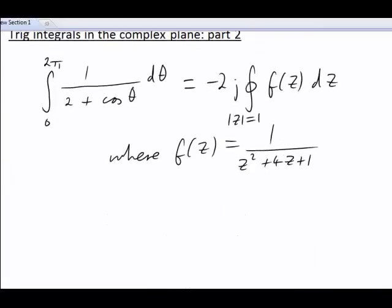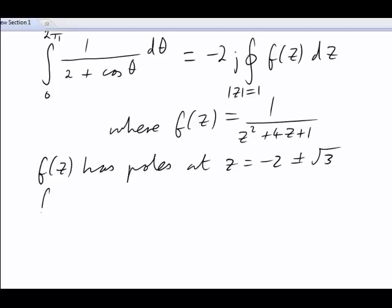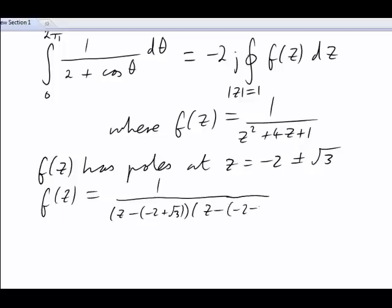Let's record some of that in our new place. So f of z has poles at z equals negative two plus or minus root three. We could write f of z as one over z minus negative two plus root three multiplied by z minus negative two minus root three. Those two factors are both linear. They appear only to power one and not squared or cubed. That means they are simple poles.